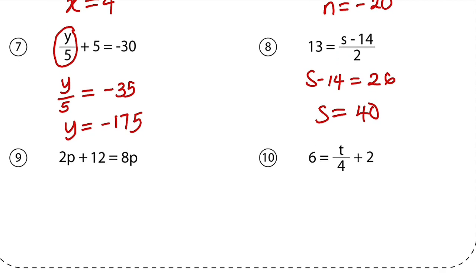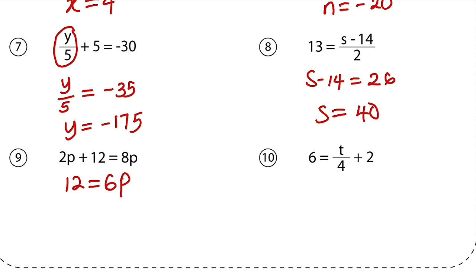Moving on to the second to last question. We have 2p plus 12 equals 8p. I know that I can take 2p to the other side to make it negative. So the moment you take 2p to the other side, it becomes negative. You have 12 equal to 8 minus 2, which is 6. So we have 6p. Then you need to ask yourself, 6 multiplied by what is equal to 12? It's definitely 2. So p equals 2. In all of these solutions, we have only 2 steps.